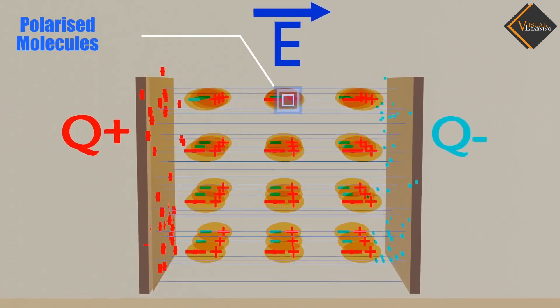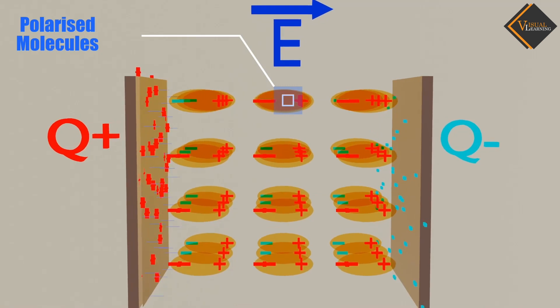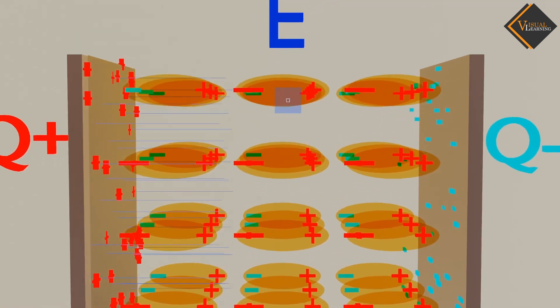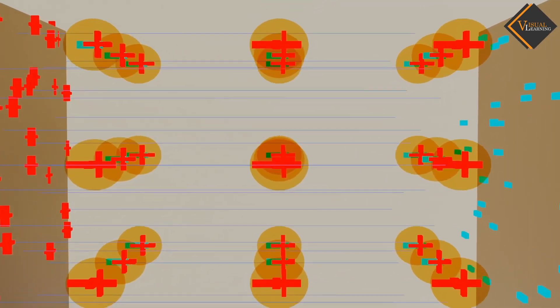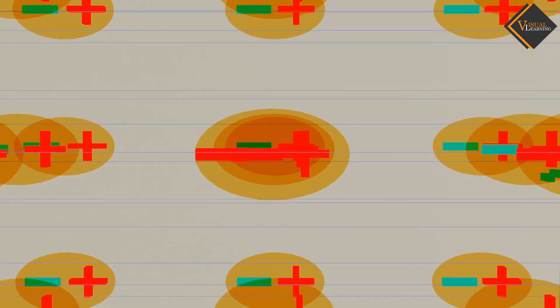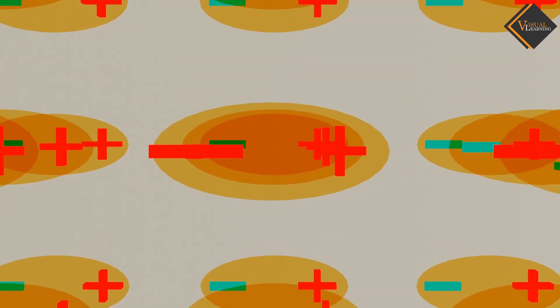As a result, these molecules expand to a certain distance. This occurs under the influence of the electric field, and this process is called polarization.